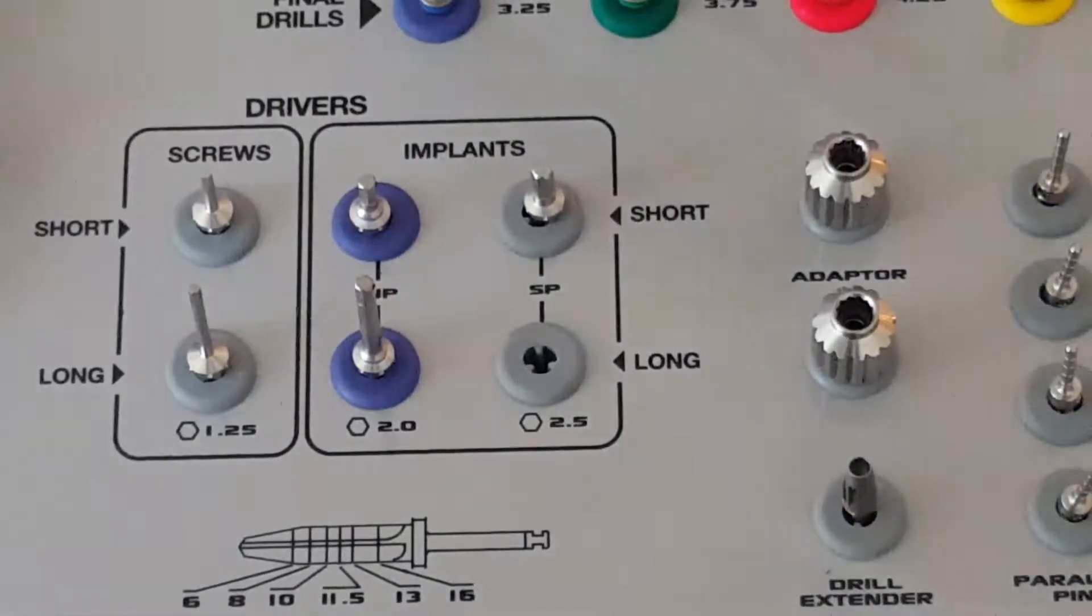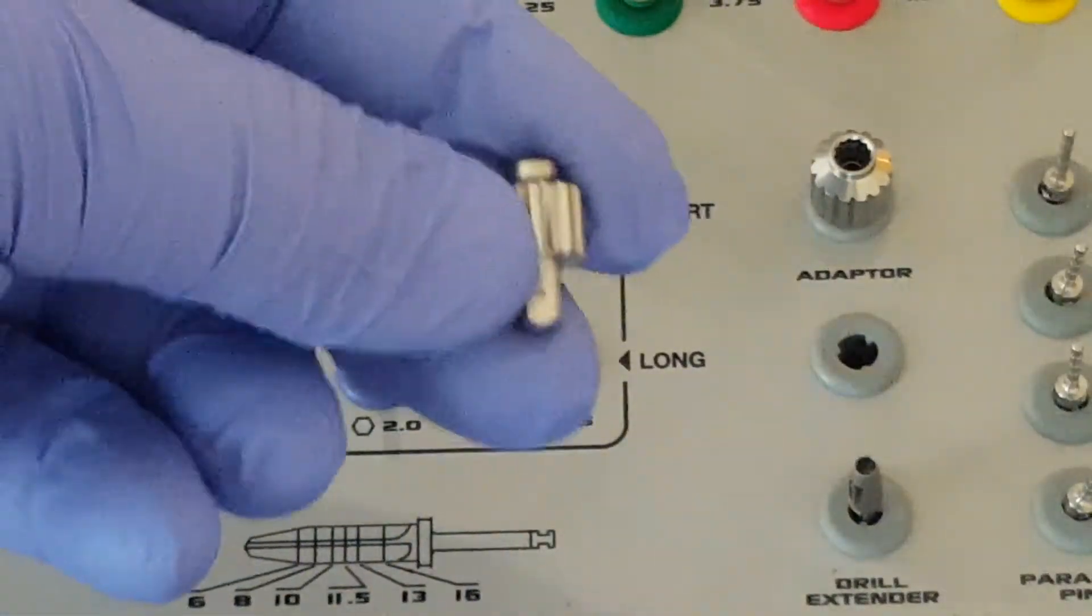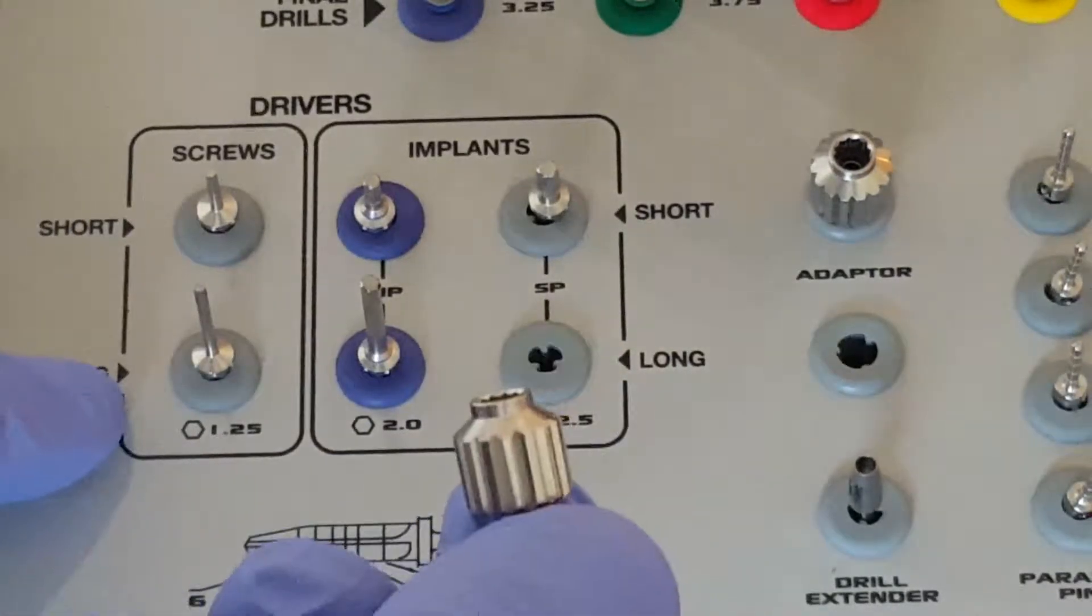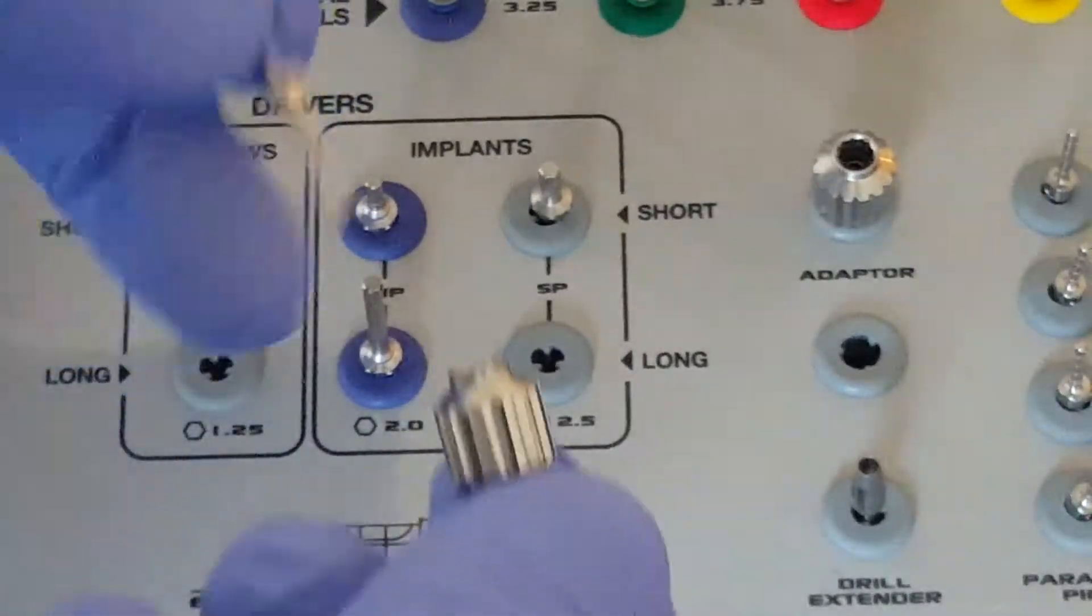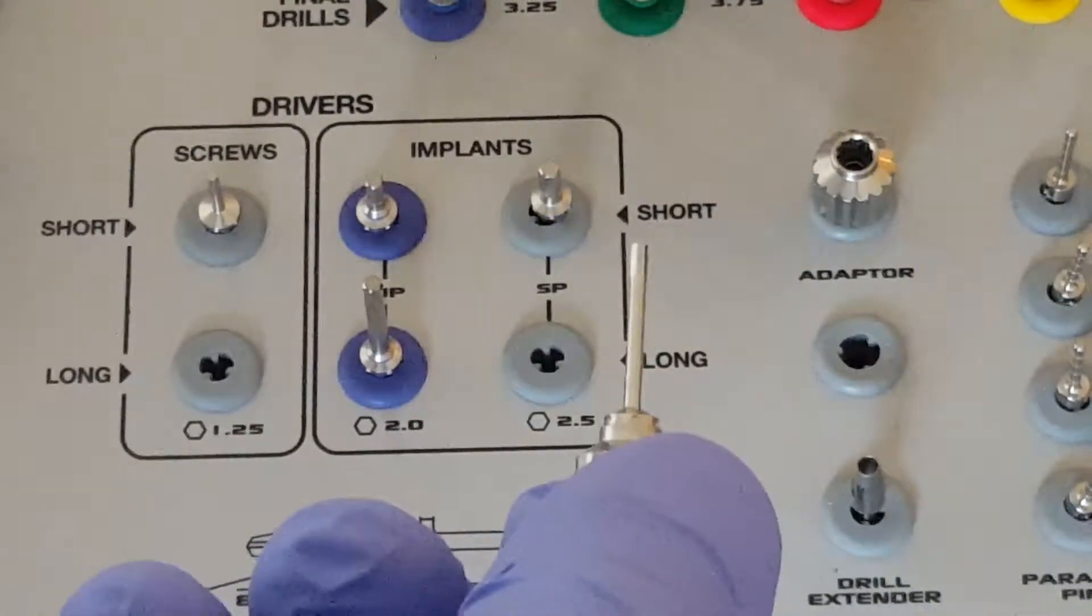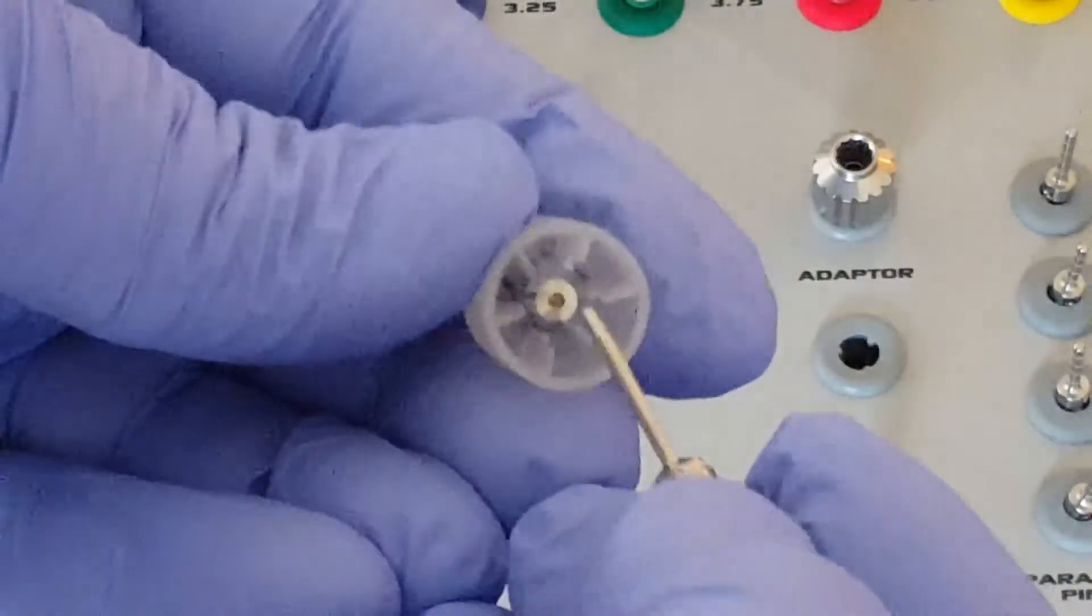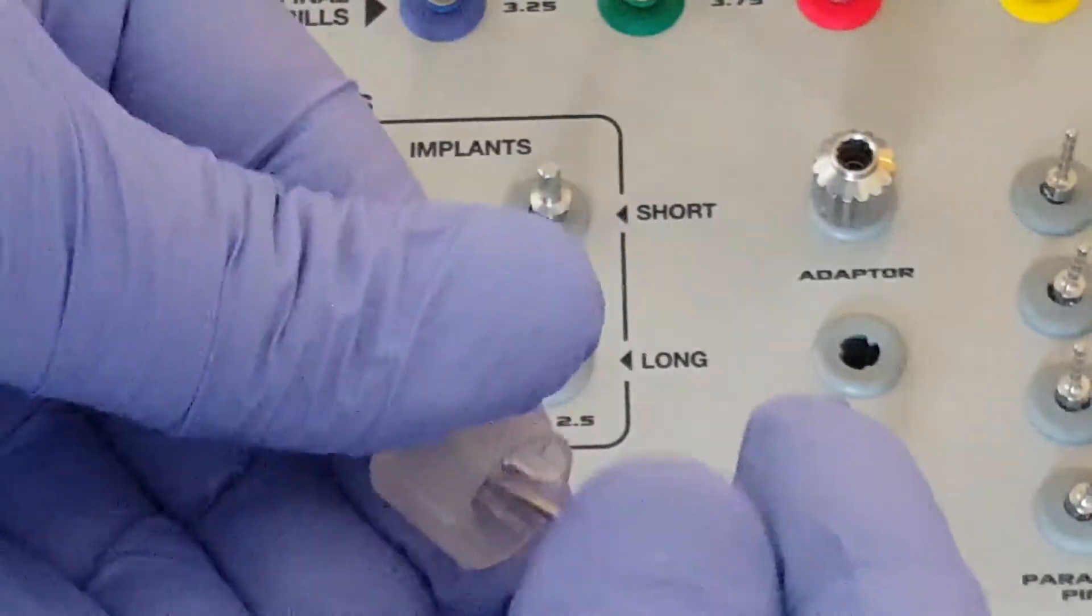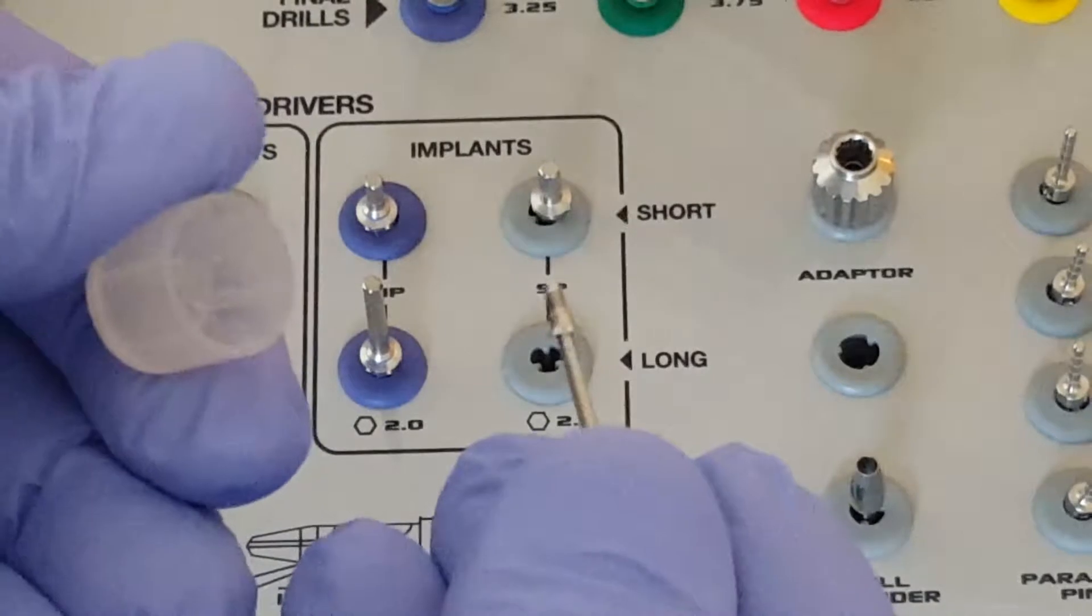When we need a screwdriver, we can take the adapter. If it's going to be a long screwdriver, we select the long hex key, or short screwdriver, the short hex key. We remove it and insert it into the adapter, and we've created a screwdriver. That screwdriver can then be utilized to remove the cover screw from inside the cap, and that cover screw can now be inserted into the implant.